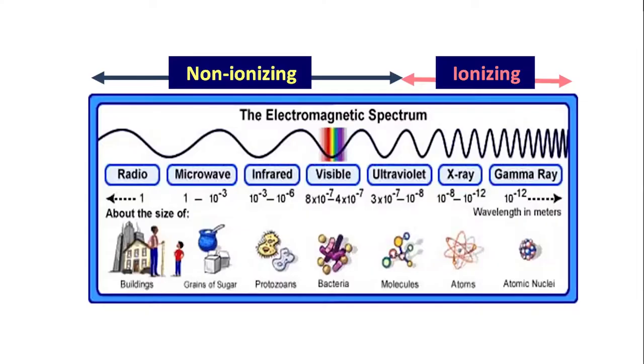First of all, you should know what radiation is. Radiation, if you have to define it, is energy in the form of waves or particles. Any energy in the form of waves or particles you can call radiation. We have a wide range of radiation spectrum, and in this slide you can see the electromagnetic spectrum starting from radio waves going up to gamma rays.